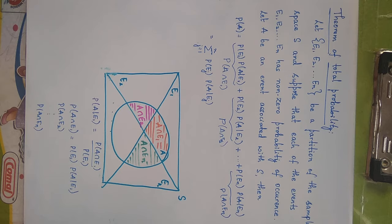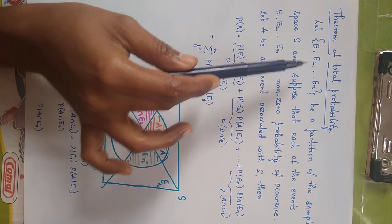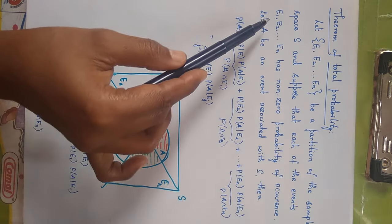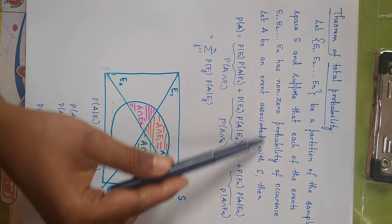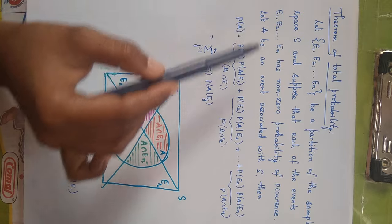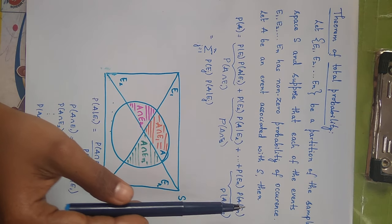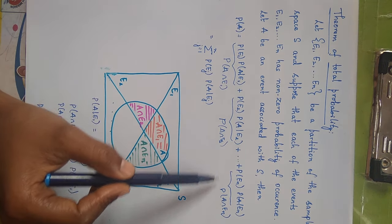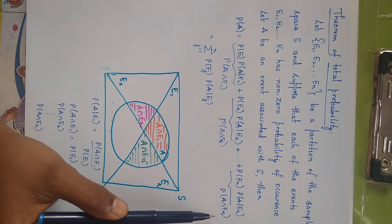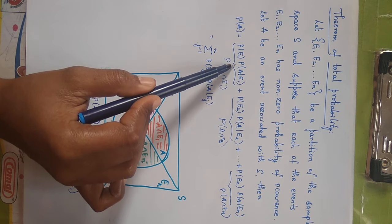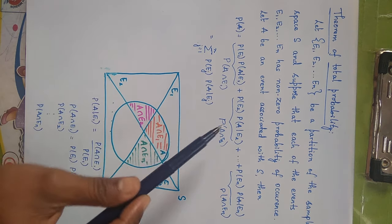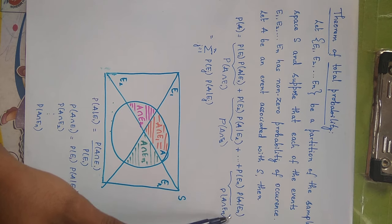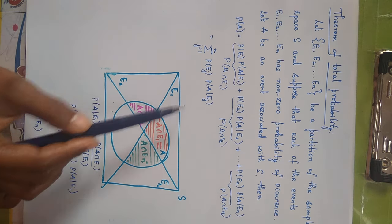Now see the formal definition of the theorem of total probability. Let E1, E2, and so on up to En be a partition of the sample space S, and suppose that each of the events E1, E2, up to En has non-zero probability of occurrence. Let A be an event associated with S. Then P(A) = P(A intersection E1) + P(A intersection E2) + ... + P(A intersection En), which equals P(E1)·P(A|E1) + P(E2)·P(A|E2) + ... + P(En)·P(A|En).